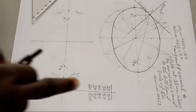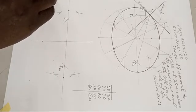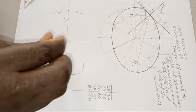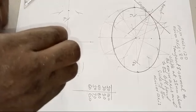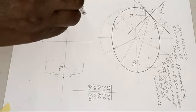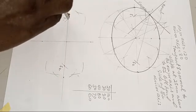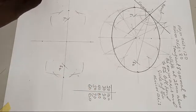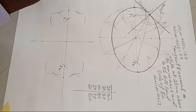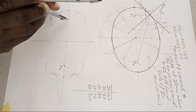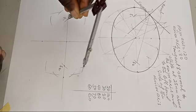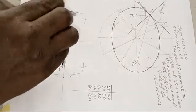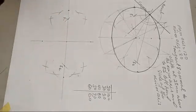Next pair: 30 and 90. Measure 30 on your compass, stay on F1, and mark arcs above and below. Go to F2 and do the same. Now measure 90 on your compass and go to F1 to intersect the arcs, then go to F2 and intersect those arcs.